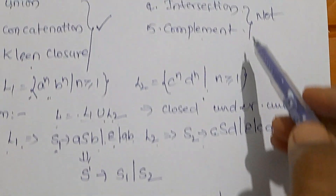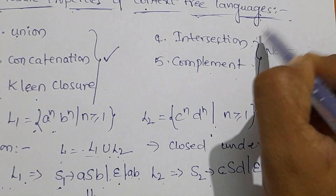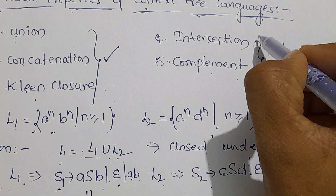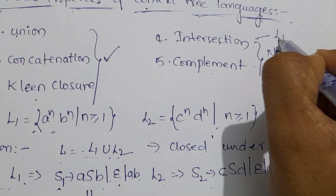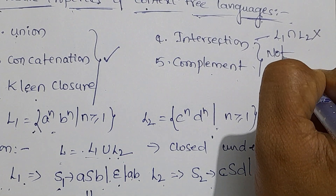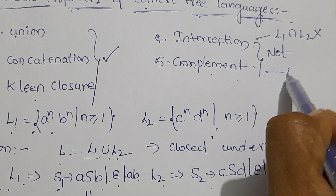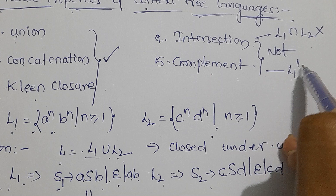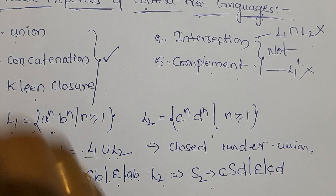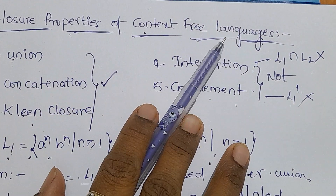The next two properties are intersection and complement. Even though L1 and L2 are individually context-free languages, their intersection — L1 ∩ L2 — will not necessarily be a context-free language. Similarly, if any language belongs to CFL, its complement does not necessarily belong to CFL. These are the closure properties of context-free languages.